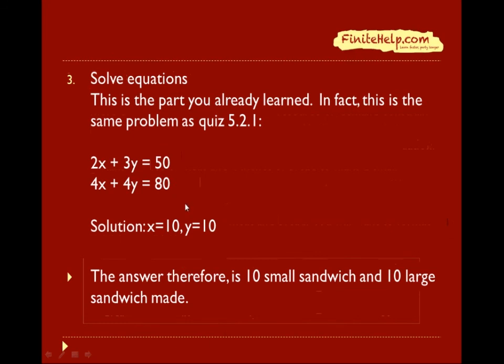Now that you have the equations, now you just solve for it. And in fact, this is actually the same problem as quiz 5.2.1. You would just do what you did there. And you would have solved for that x equals 10 and y equals 10. Since this is a word problem, we interpret our answer, which is that x is the number of small sandwich made and y is the number of large sandwich made. Therefore, we need to make 10 small sandwich and 10 large sandwich to satisfy the conditions.